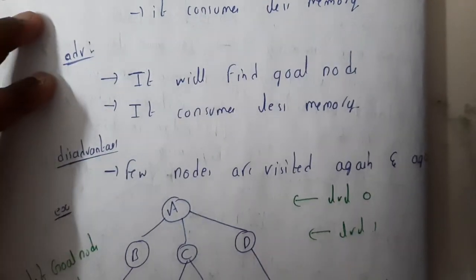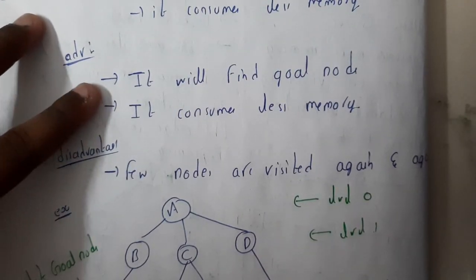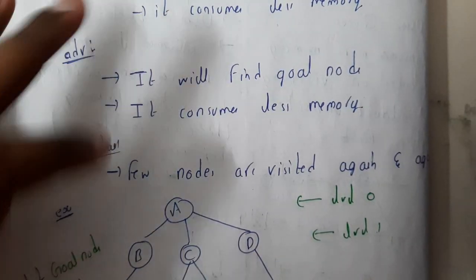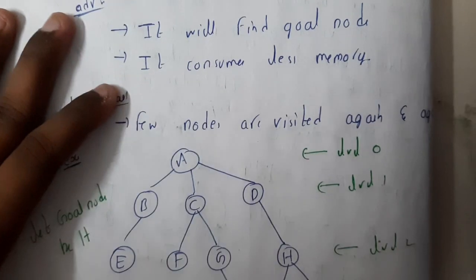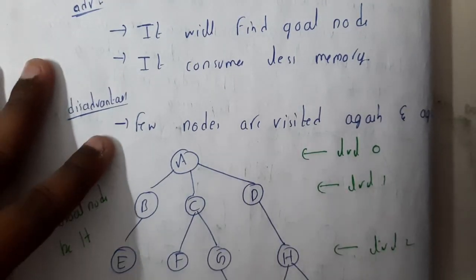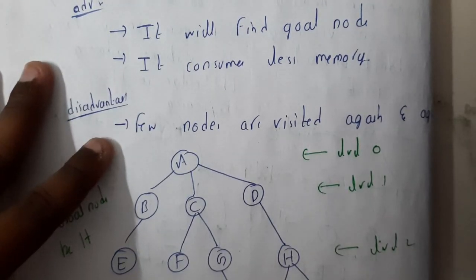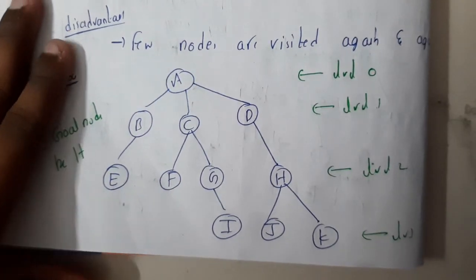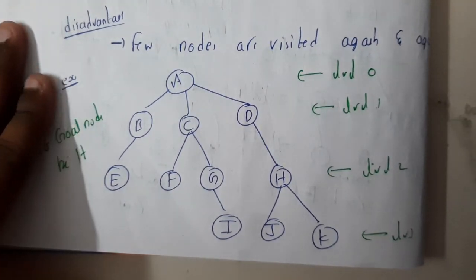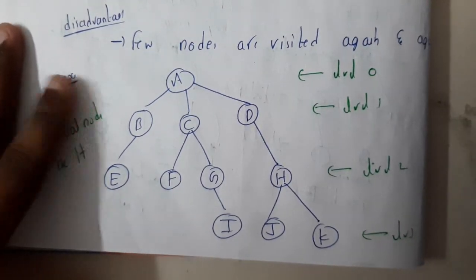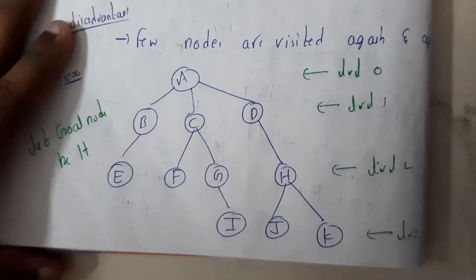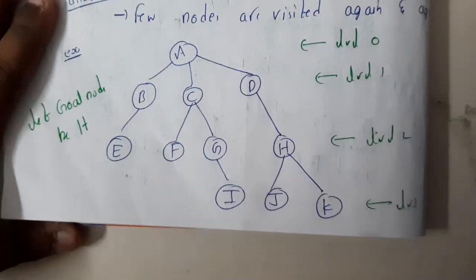So the advantage is that it finds the goal node and consumes less memory. The disadvantage is that a few nodes are visited again and again. If you observe the problem you'll understand that nodes like B and C are visited repeatedly.